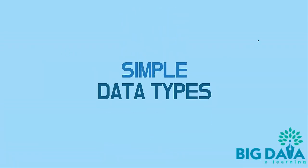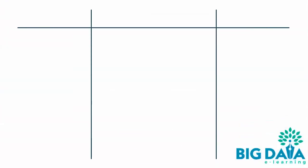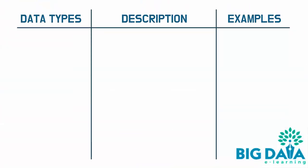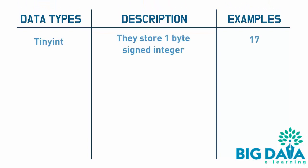Simple Data Types. Here are some of the simple data types you will need to know, along with their description. TinyInt: they store 1 byte signed integer. For example, 17.